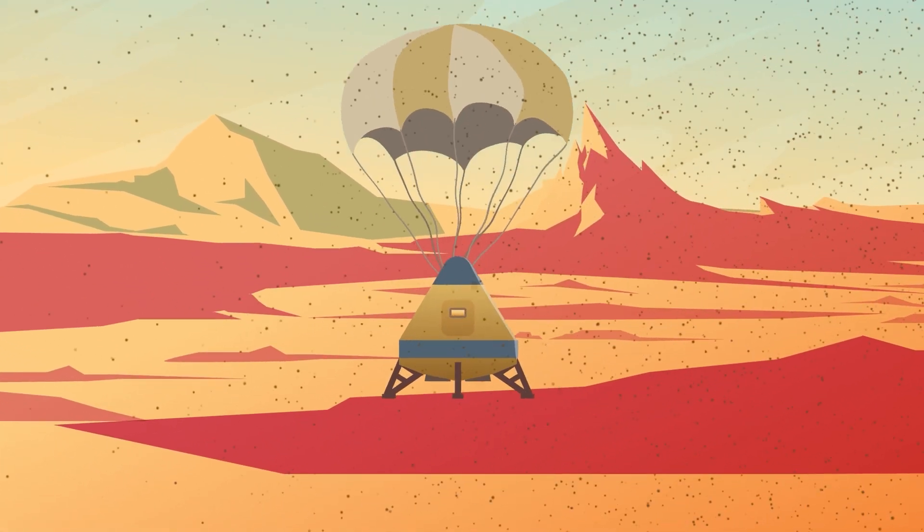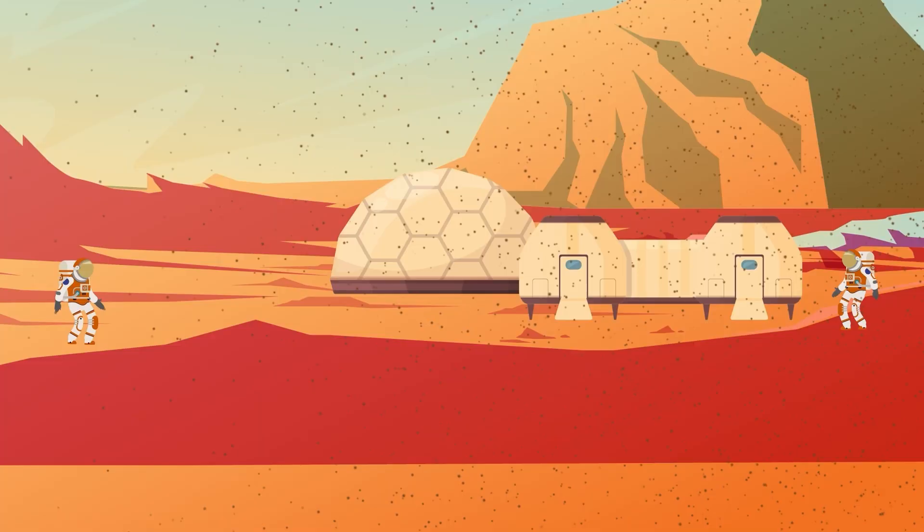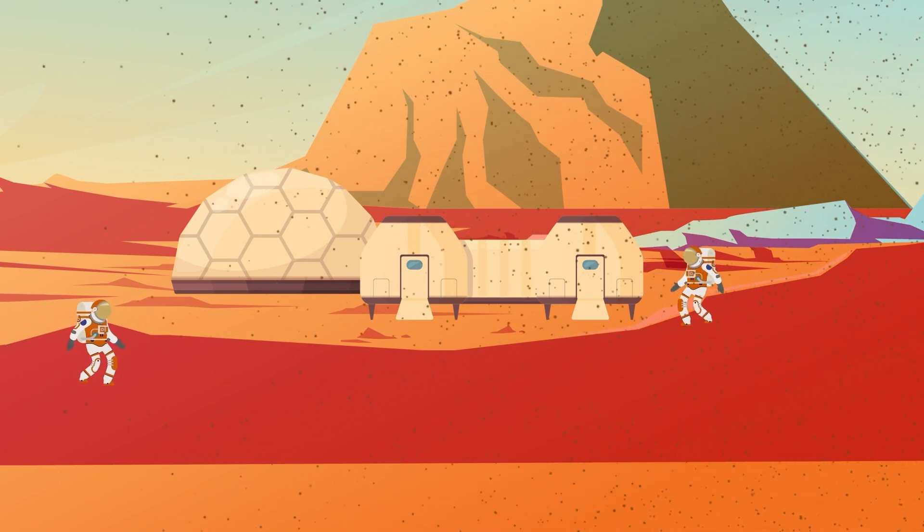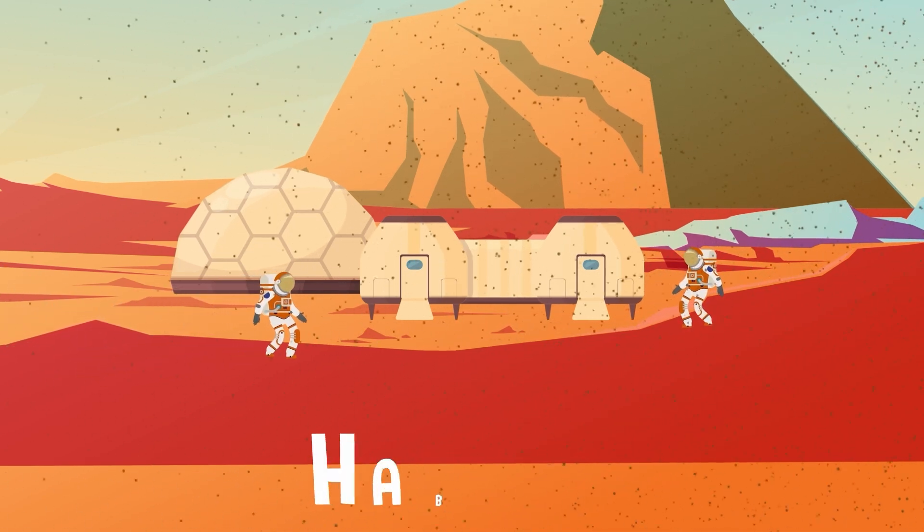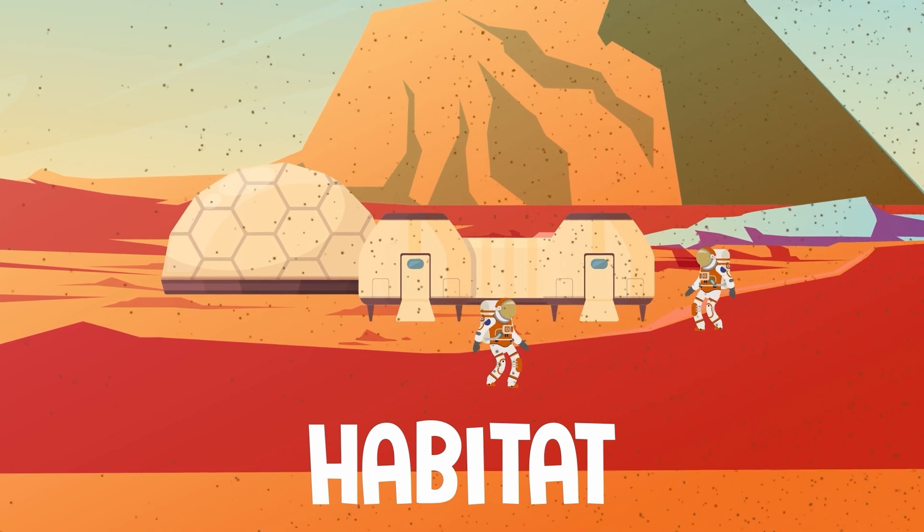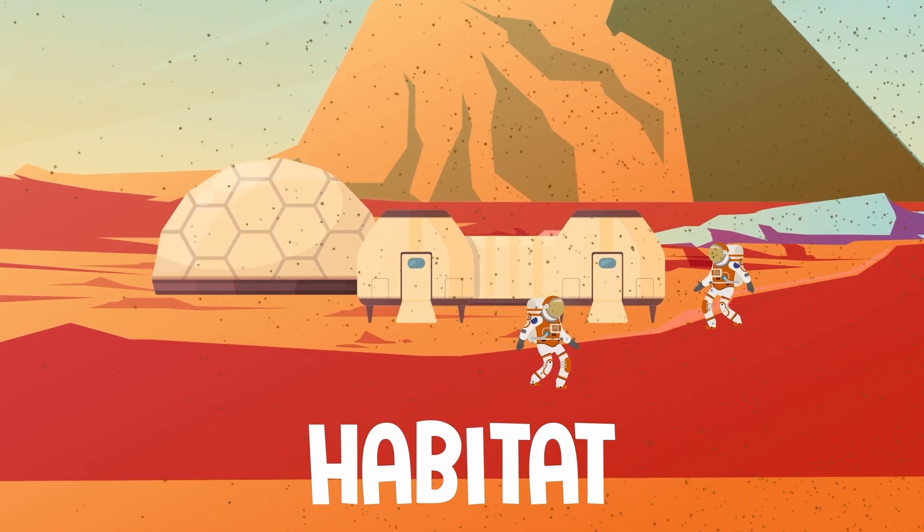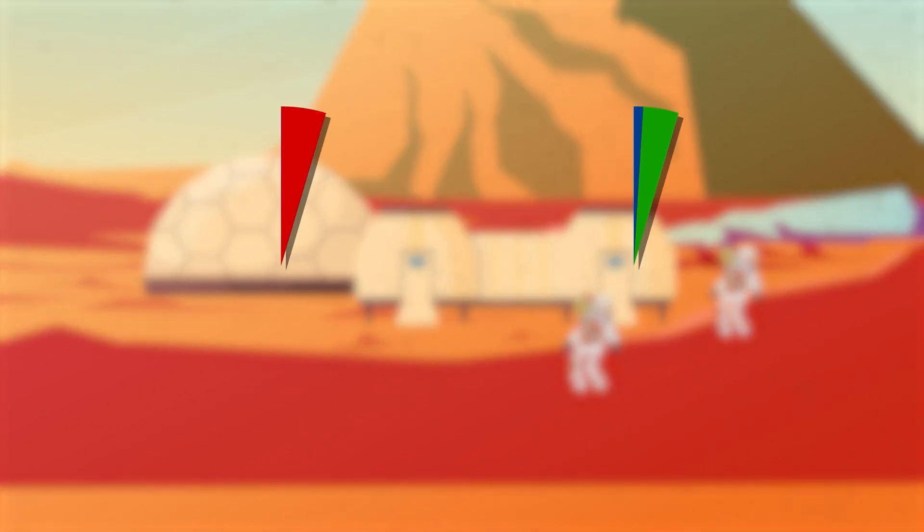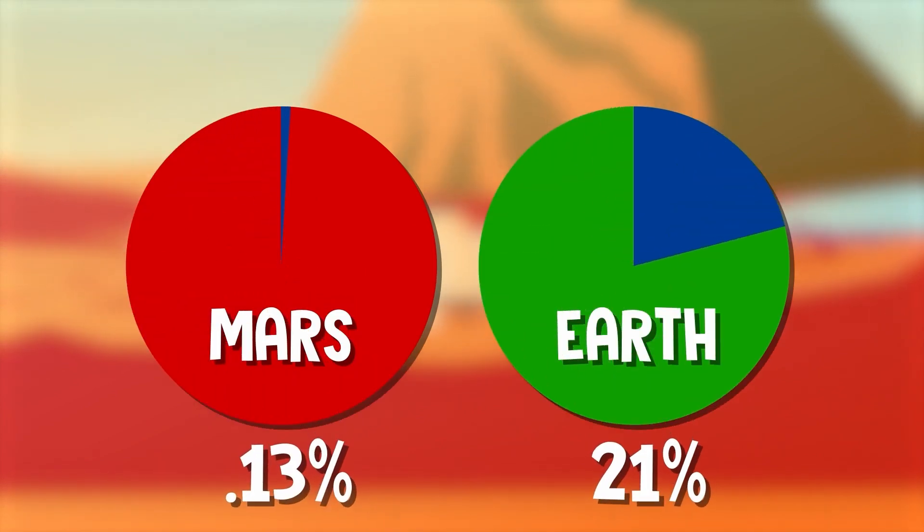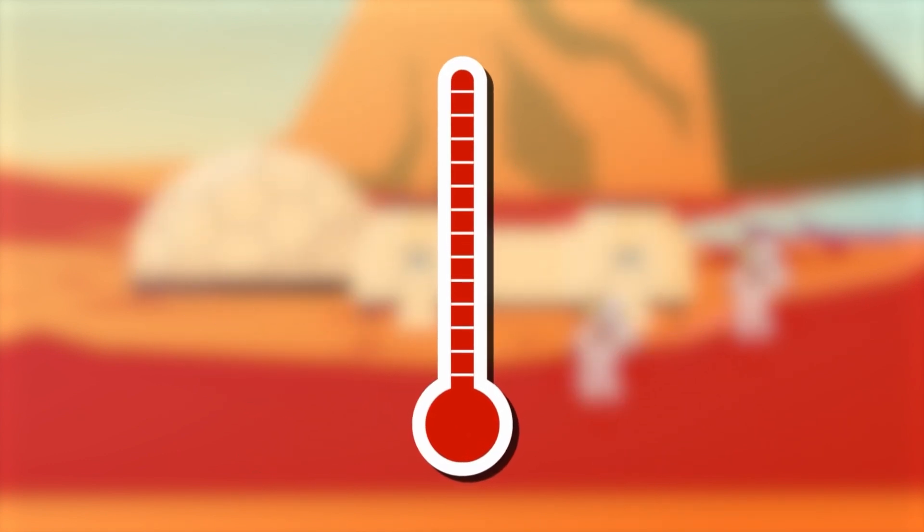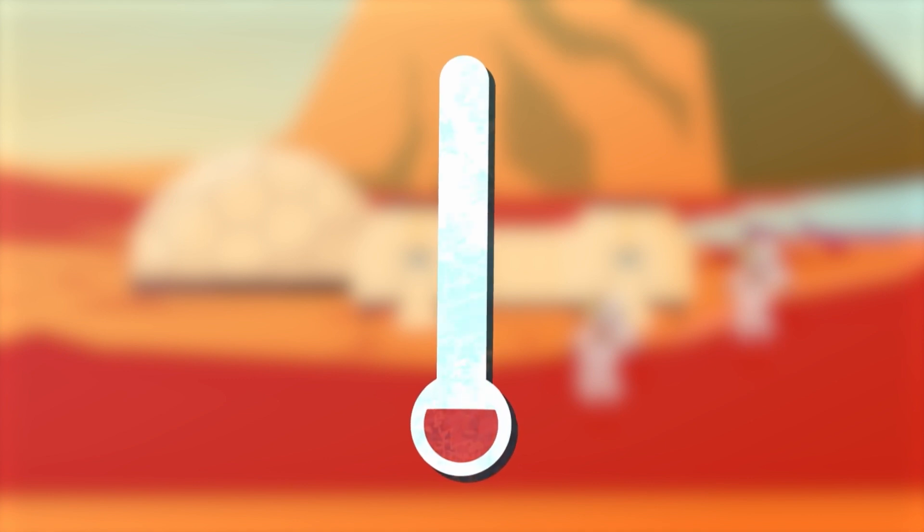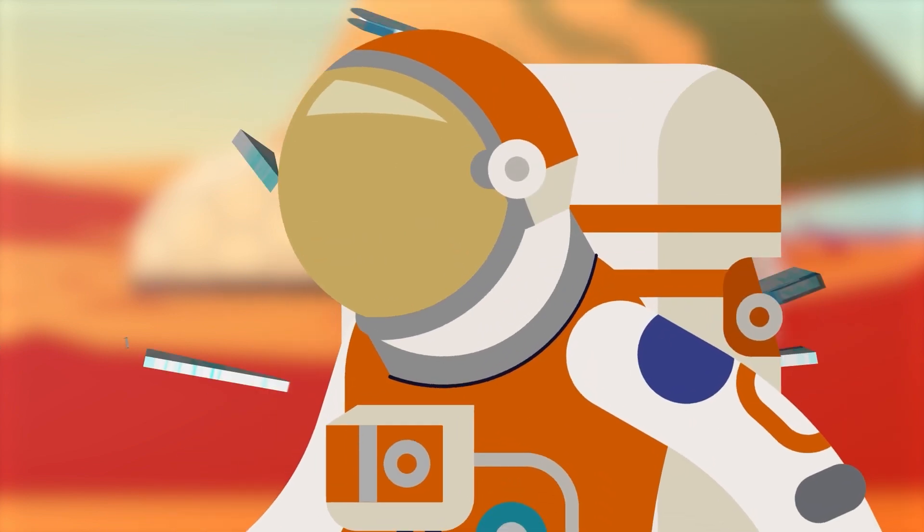Once safely on the surface, astronauts would set up and live inside a special pressurized and temperature-controlled tent-like structure called a habitat. Why? Well, Mars's atmosphere is a lot thinner than Earth's. That means there's way less oxygen to breathe. It also means it's a lot colder. Mars is negative 81 degrees Fahrenheit on average. Not the kind of conditions humans could survive without technology.